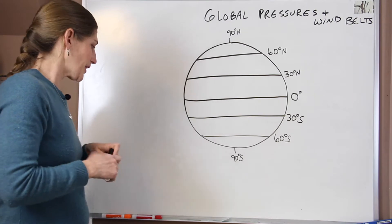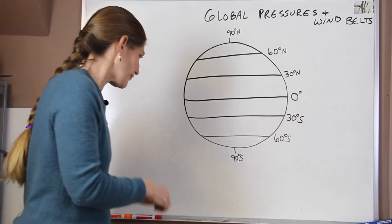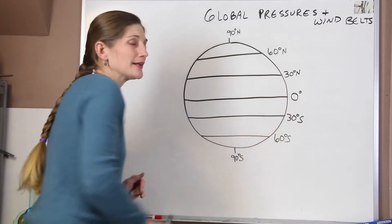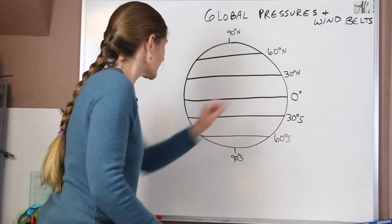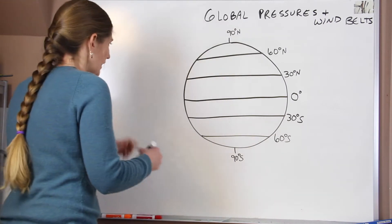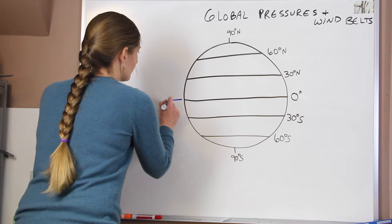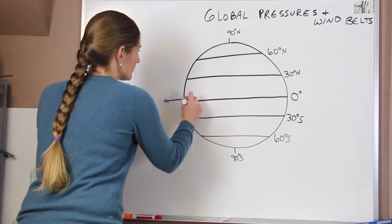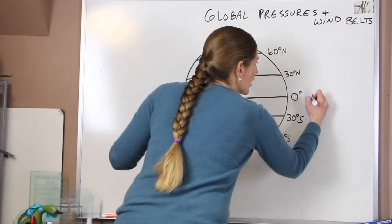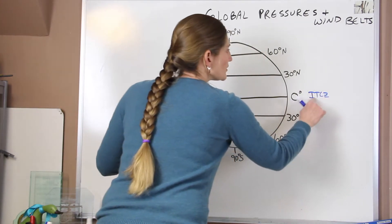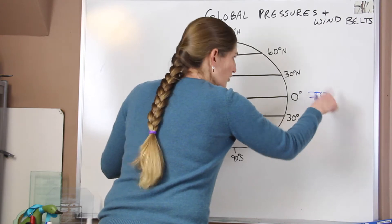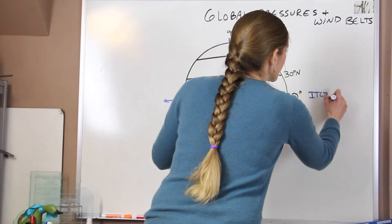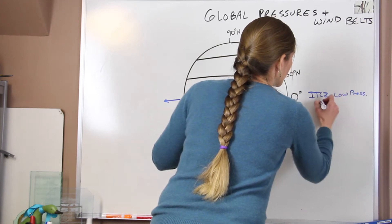So when we start to think about this, we've got to maybe use some different colors to try to keep track of everything. As we know from incoming solar radiation, it tends to be concentrated around the equator. So we have warm air right at the equator, and that causes air to start to rise. This is from warming here. What this creates is a low pressure.